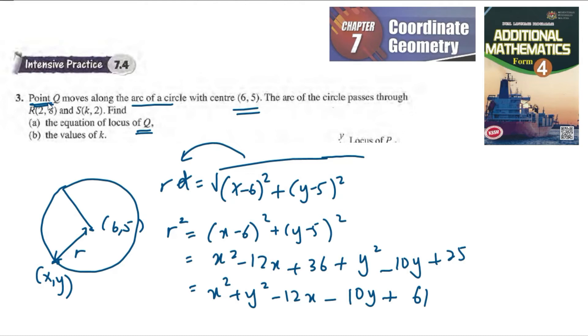Here it passes through R(2,8), which is also x and y. We can substitute when R is (2,8). So we get R² is equal to x² is 2² plus y² is 8² minus 12 times x is 2, minus 10 times y is 8, plus 61.